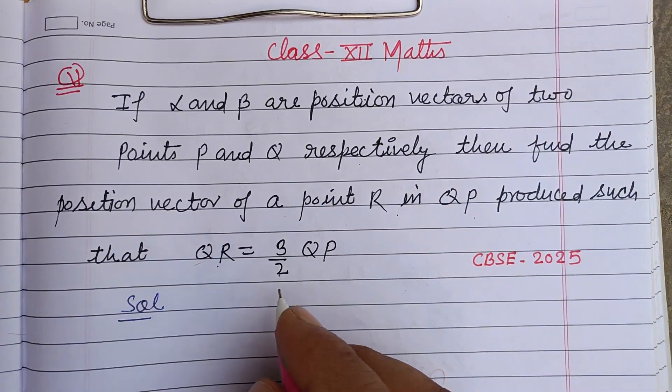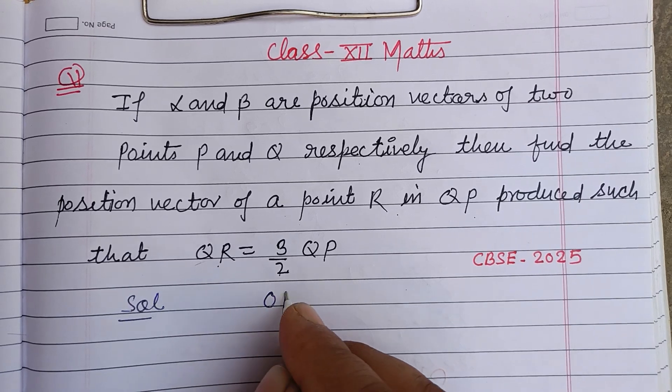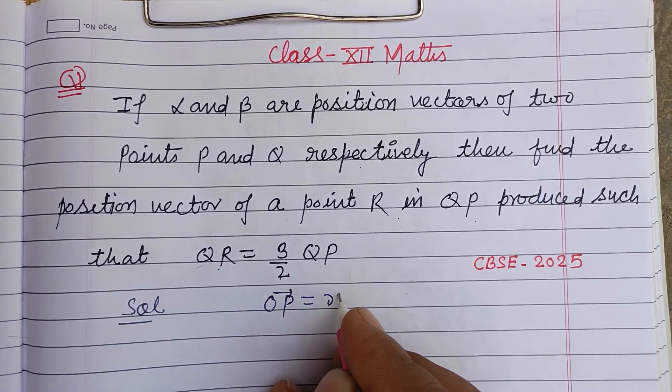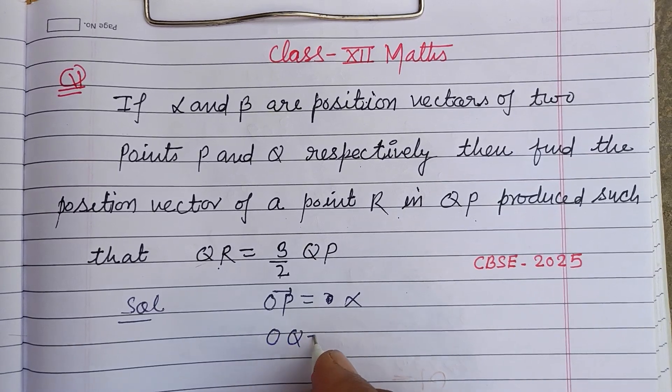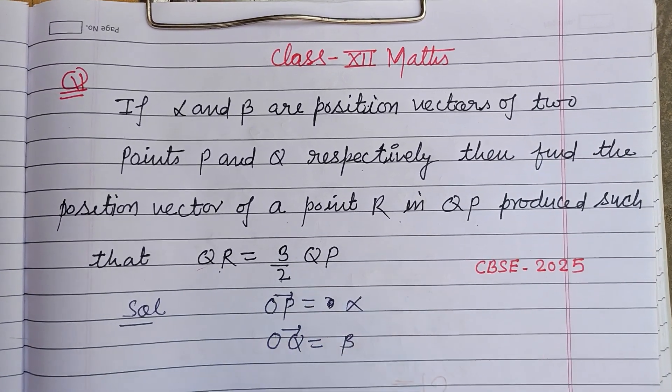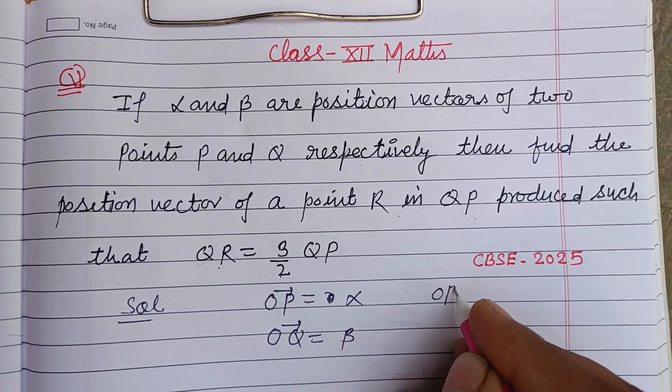position vectors of P and Q are given, so OP is given to us as α, OQ is given to us as β, and OR is required.